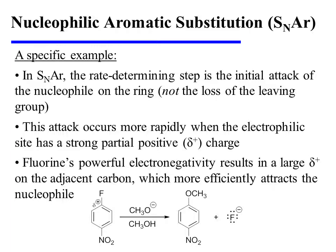The first step of the mechanism — that initial attack of the nucleophile on the ring — is the rate-determining step because it leads to the formation of the charged Meisenheimer complex, which is expected to be a high-energy intermediate. This initial attack occurs more rapidly when the electrophilic site has a strong partial positive charge. Fluorine's powerful electronegativity is what matters most in this reaction, because it results in a large partial plus on the adjacent carbon, which more efficiently attracts the nucleophile, thereby enhancing the rate of the rate-determining step.